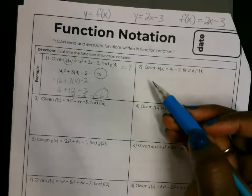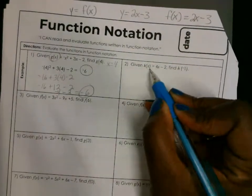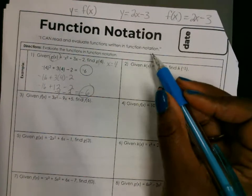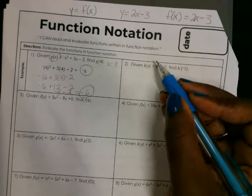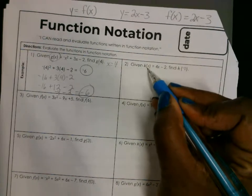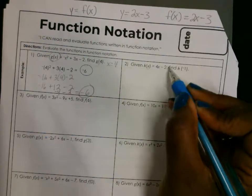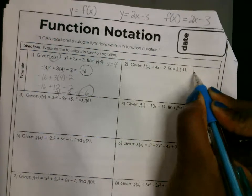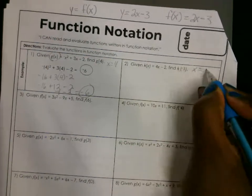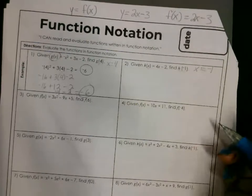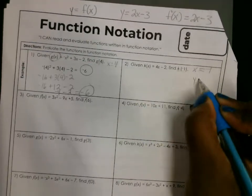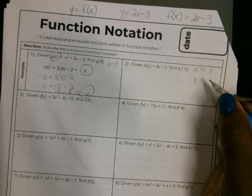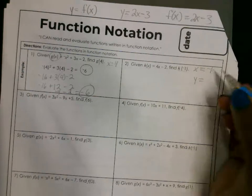We're going to do the same thing for the next one. It says h of x — same thing as writing f of x, g of x, whatever. H of x is the same as saying y. They wrote this equation in function notation, and we want to figure out what y is when x equals the number in the parentheses, which is negative 1. So we're going to find y, or h of x, by substituting the value for x.